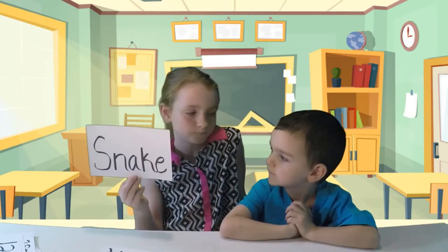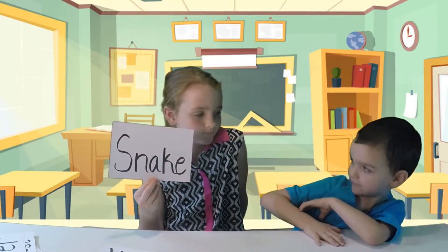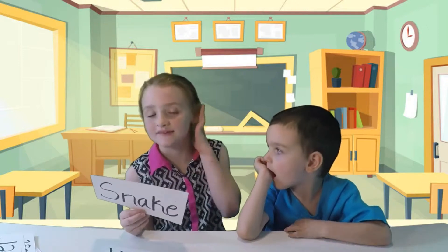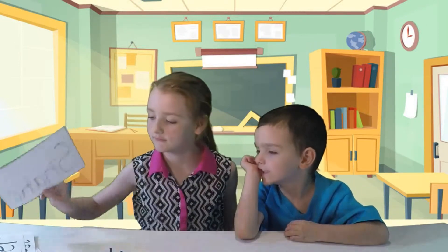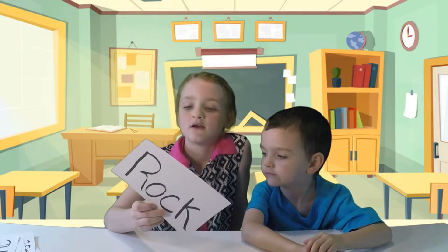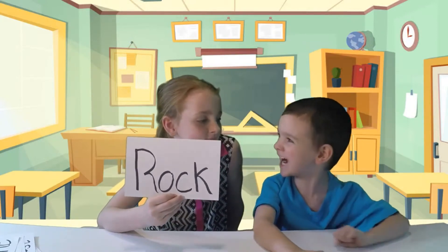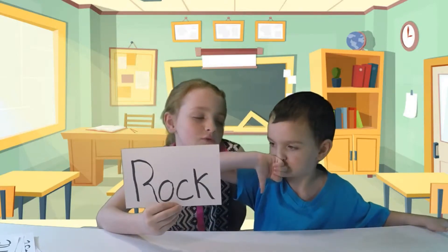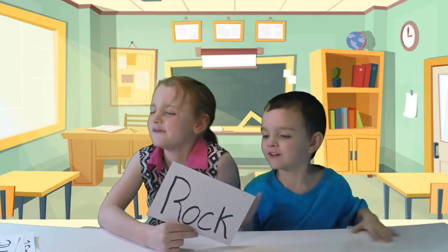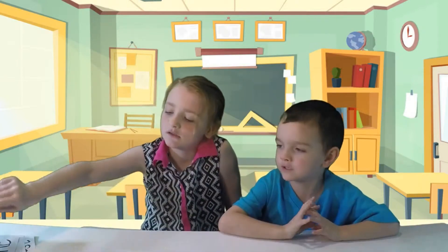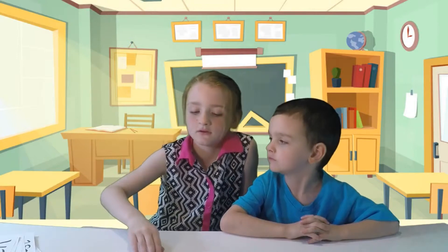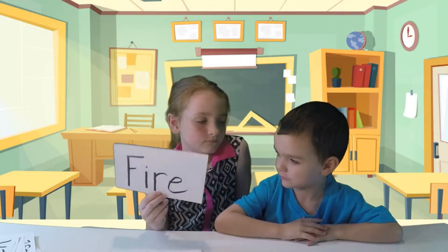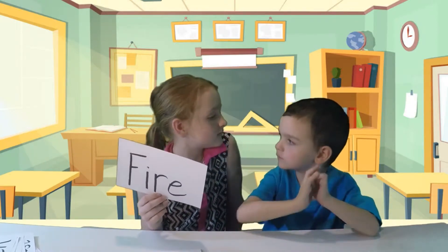What about a snake? Yes — a snake is living, it's an animal. And some snakes are poisonous. What about a rock? Do you guys remember? A rock isn't living — does it have eyes and a mouth? Is it a plant? No. What about fire? A fire is not living.